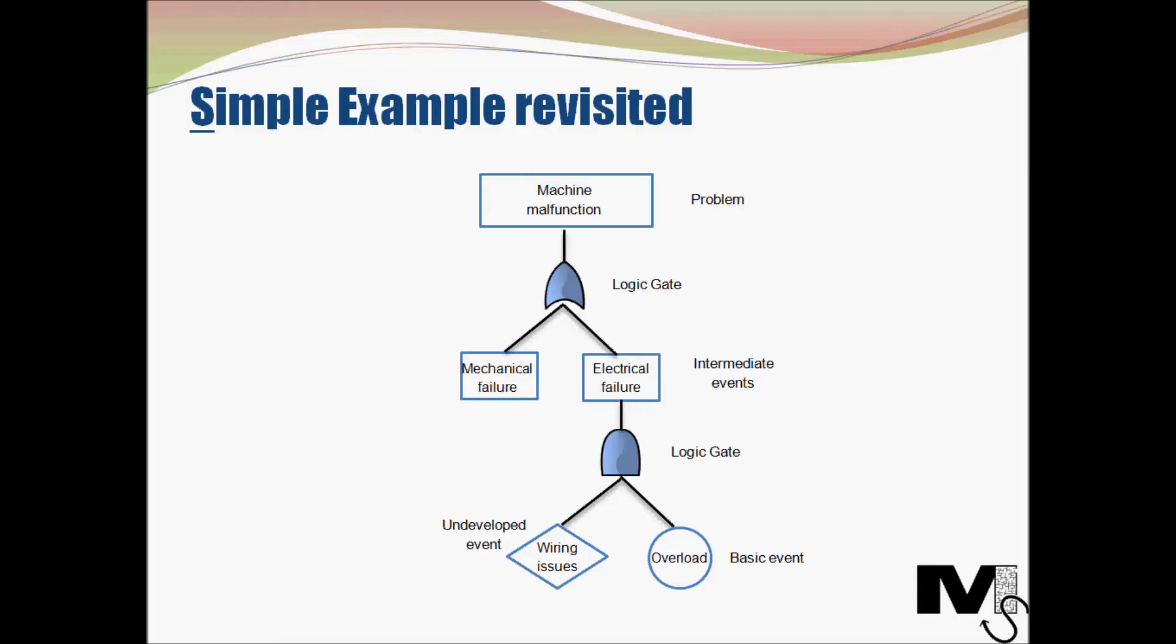Now for an electrical failure to happen there would be a problem with the wiring and an overload. These would both need to happen for the electrical failure to take place, and that is why we use an AND gate here. The basic problem diagnosed in this case is an overload, and that therefore becomes the basic event. So that is why it's in the circle at the bottom. Wiring issues has been identified as an undeveloped issue in this case. This would actually require further investigation before we propose any actions in this regard. So this is our simple example revisited.